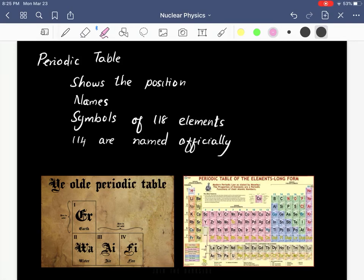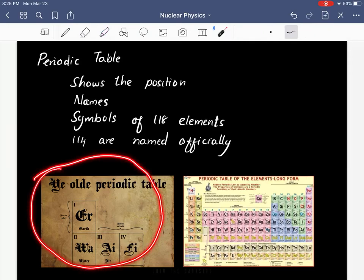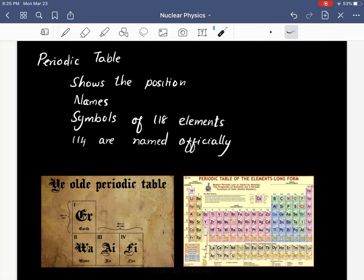118 elements, of which 114 are named officially. One periodic table you see here is based on Aristotle's idea that all matter is made of four elements: earth, water, air, and fire. But actually this is the...